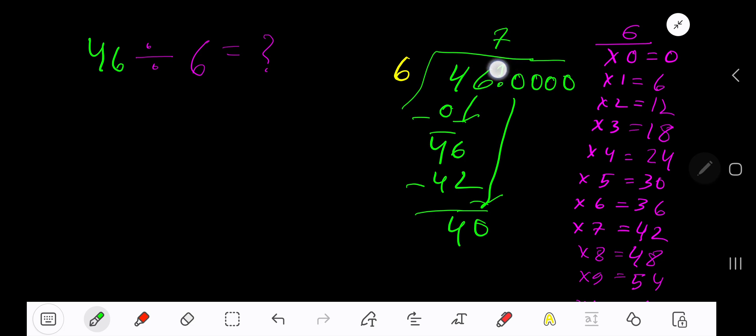6 goes into 40 how many times? 7 times 42, which is greater, so 6 times. Write 6. 6 times 6 is 36. Subtract, you are getting 4.